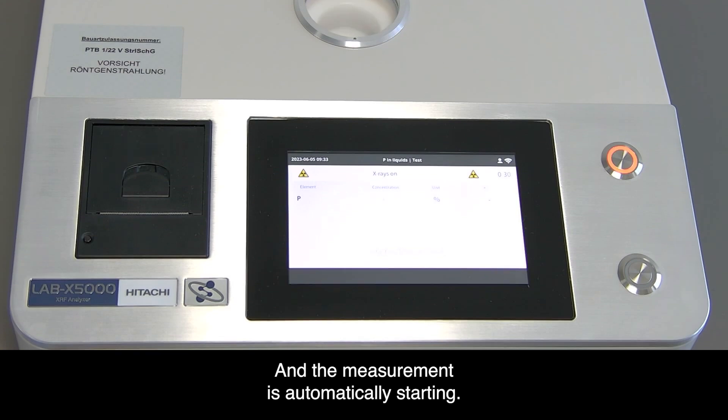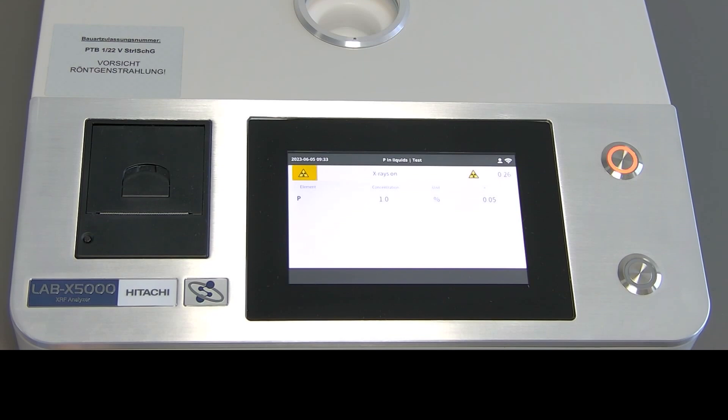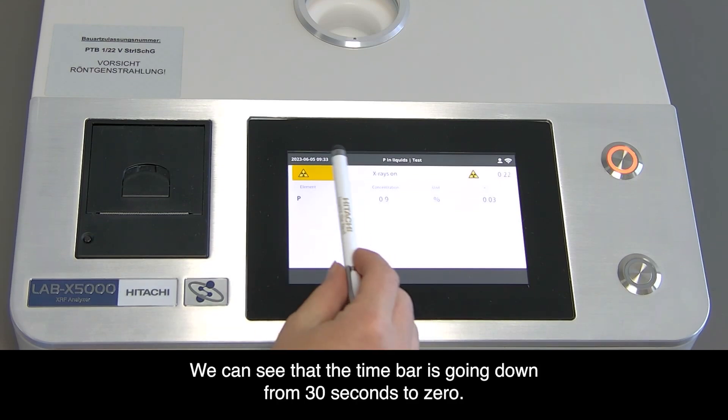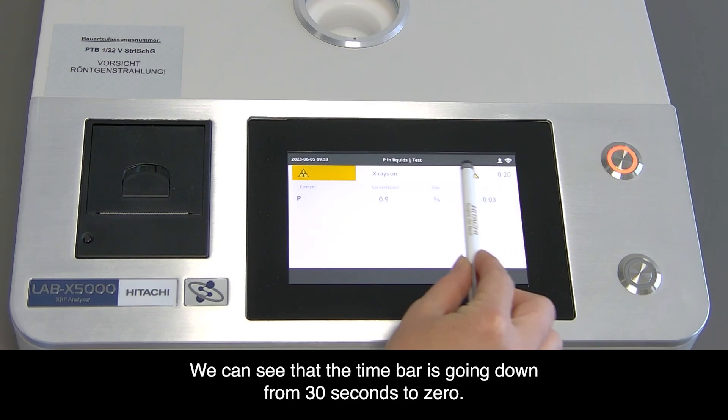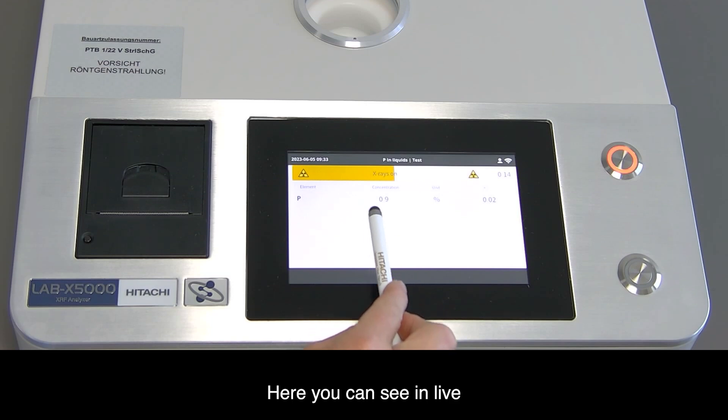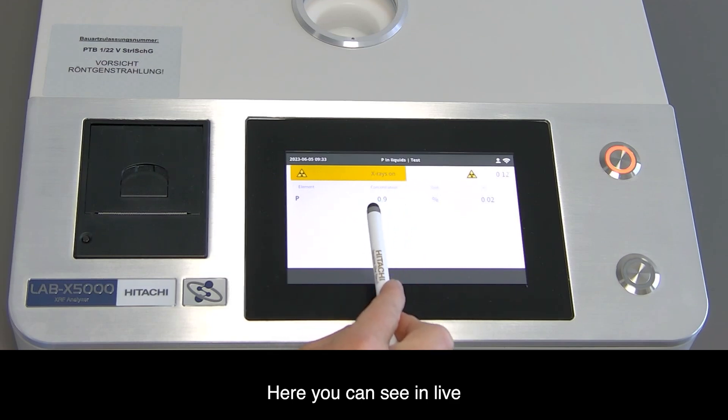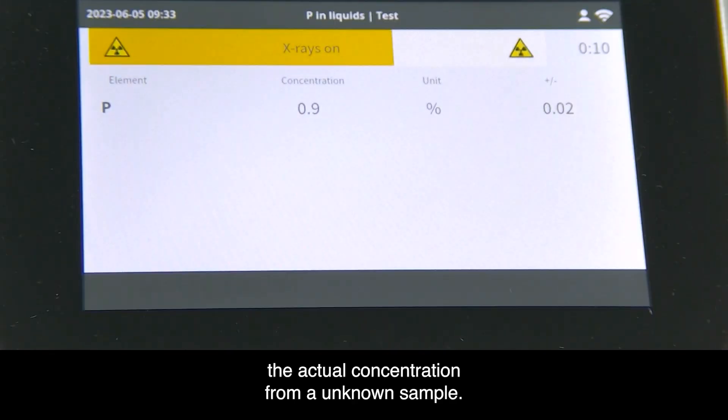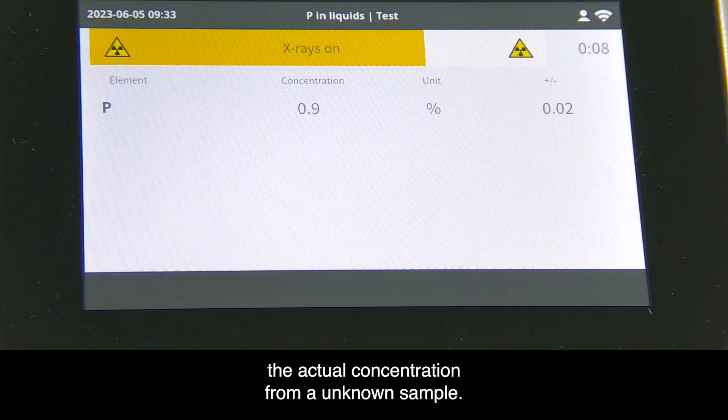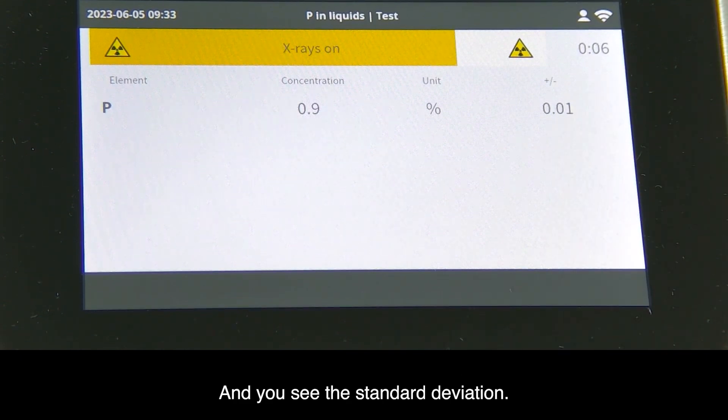The measurement is automatically starting. We can see the time bar going down from 30 seconds to zero. Here you can see live the actual concentration from our unknown sample and the standard deviation.